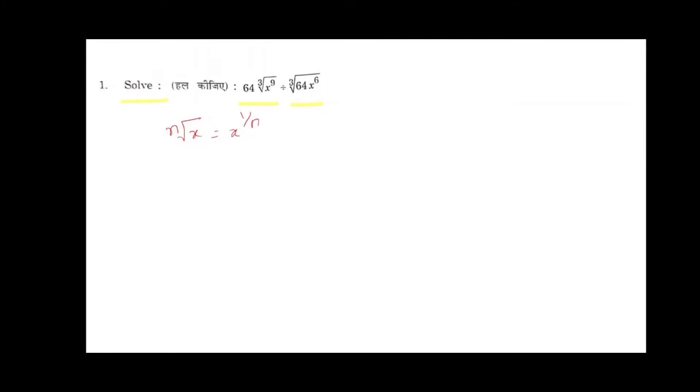We know that nth root x is equal to x power 1 by n. So here we can write 64x power 9 whole power 1 by 3 divided by 64x power 6 whole power 1 by 3.